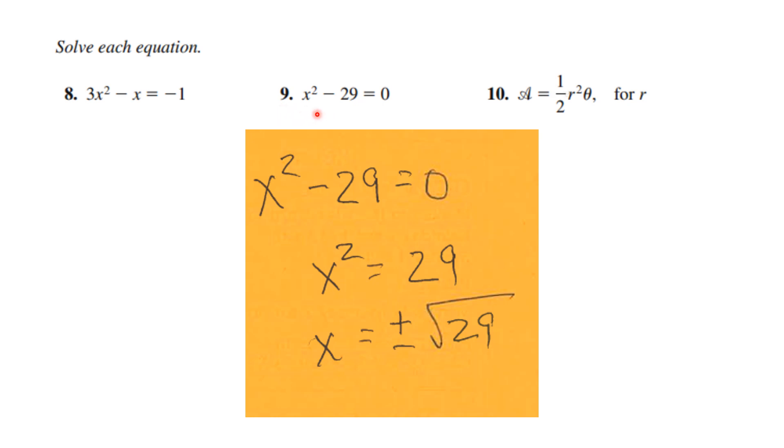For x squared minus 29 equals 0, the best way is to use the square root property. Throw the 29 to the other side and take the square root. It's important to realize that the square root of x squared is the absolute value of x, which means you need a plus or minus sign. The answer is x equals plus or minus the square root of 29.